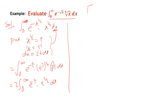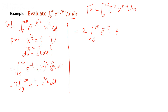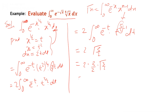Recalling the gamma function formula: Γ(n) = ∫₀^∞ e^(-x) x^(n-1) dx, we compare our integral. The power 3/2 is written as 5/2 minus 1, so we get 2·Γ(5/2). Expanding: Γ(5/2) = (3/2)·Γ(3/2) = (3/2)·(1/2)·Γ(1/2) = (3/2)·(1/2)·√π. Thus the result is (3/2)·√π.